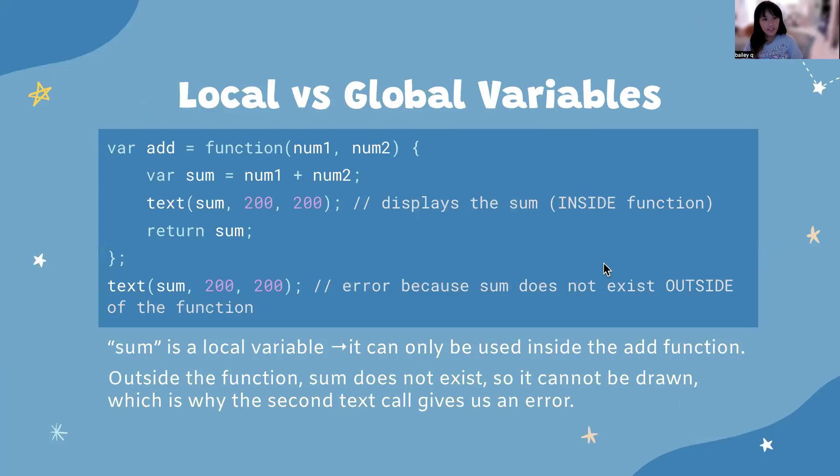Putting them more into an example here, sum is a local variable and it can only be used inside of an add function. On our first line, we have var add equals function. This add function spans from line 1, 2, 3, 4 to line 5. Anything between line 1 and line 5 is considered a part of my add function. You can see on line 2 we have var sum equals num1 plus num2. If I was to call on sum out here, we would get an error because sum does not exist outside of the function. Because my text command is on line 6 and it is not a part of my add function, the sum variable is not accessible from where we call on the text function. In this case, var sum would be my local variable. For text to be able to use a variable, it would need to be a global variable.